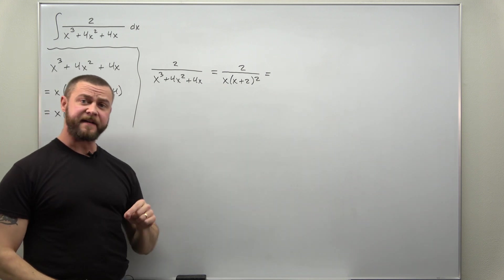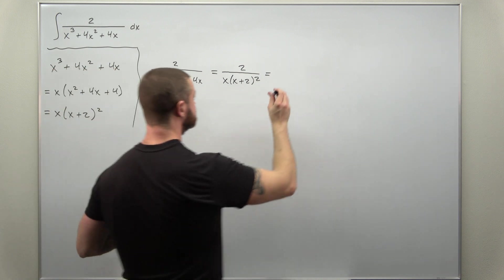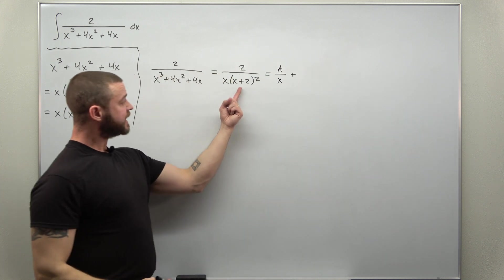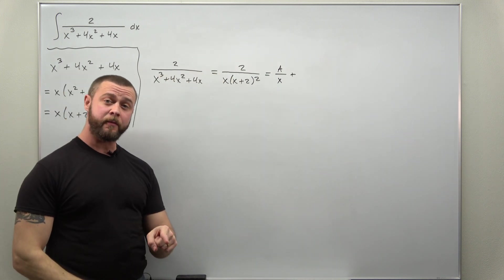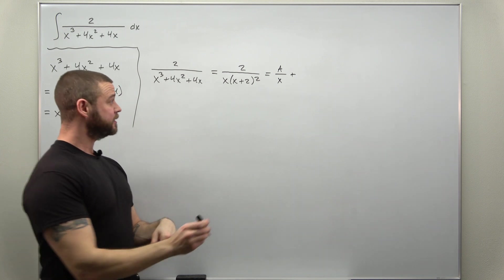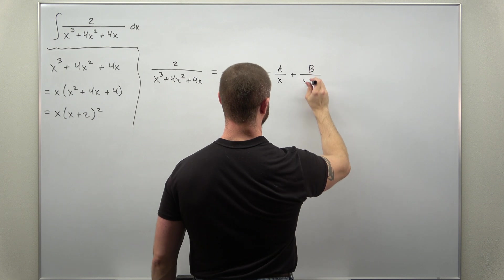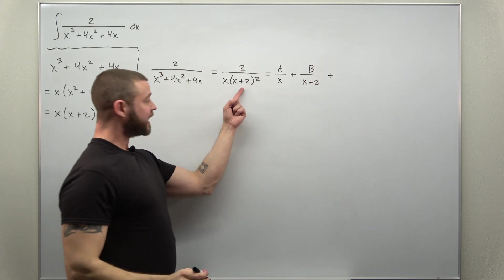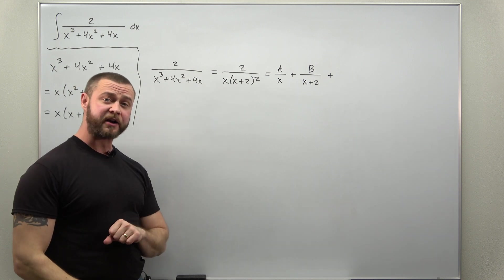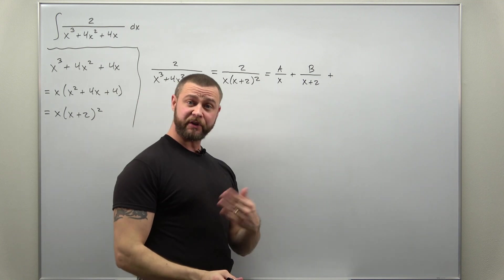Start with your first linear factor x. You'll get a partial fraction a over x. Go to your next linear factor x plus 2. You'll get another partial fraction. A constant b divided by x plus 2. And since that factor is repeated twice we include another partial fraction of the form another constant c divided by x plus 2 squared.